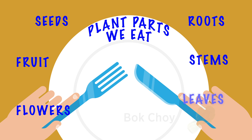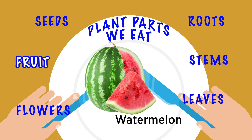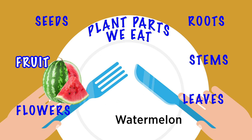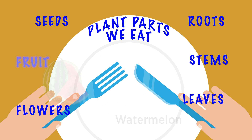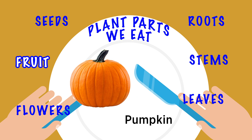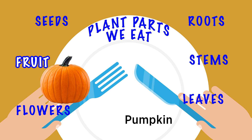Here's a good one for the summertime — watermelon. There are seeds inside, so that tells us it's a fruit. It also happens to be sweet, which is what most people associate with fruit. This one's not so sweet but is also a fruit — the pumpkin. All those pumpkin seeds inside tell you that the pumpkin is a fruit.